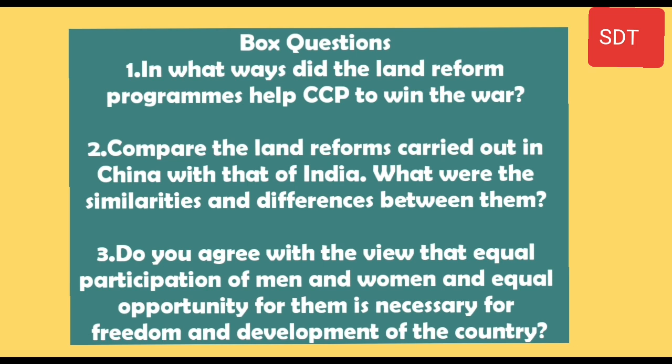The CCP rule gradually established a single-party rule in which the supreme leader or chairman was all-powerful. All opposition activities were disallowed. Discussion questions: In what ways did the land reform programs help the CCP win the war? Compare the land reforms carried out in China with those of India — what were the similarities and differences? Do you agree that equal participation of men and women and equal opportunity for them is necessary for the freedom and development of a country?